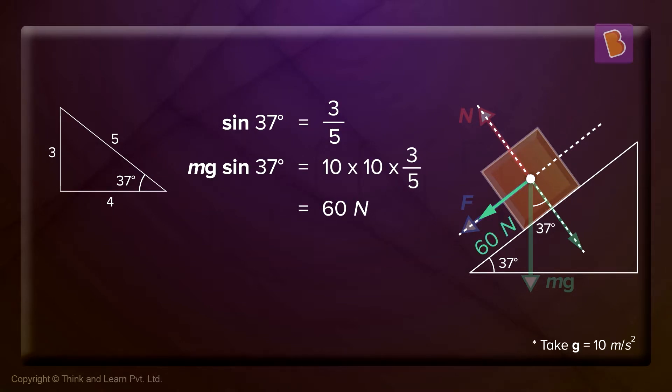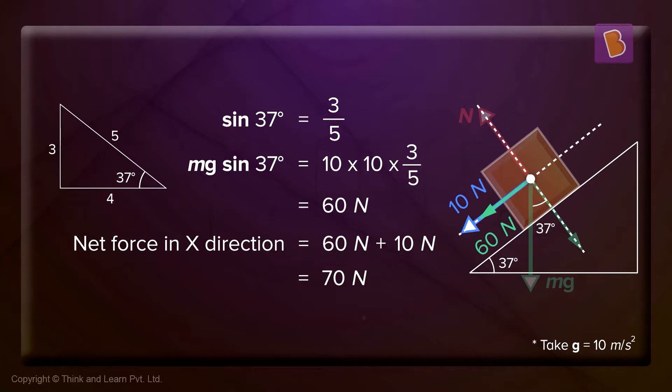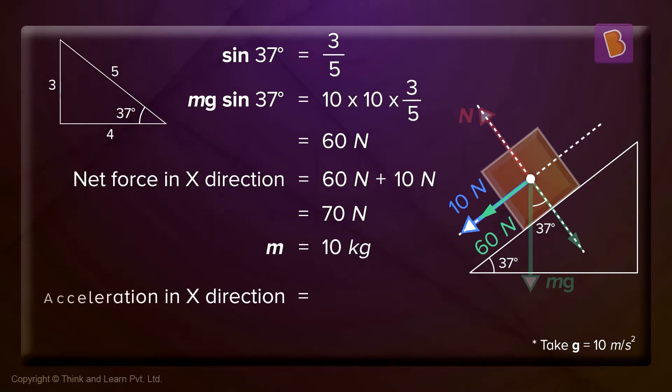Now, if I find the net force in that direction, that will be 60 Newtons plus 10 Newtons, equal to 70 Newtons. That's the net force in the x-direction. Now, you have the mass, right? How much is the mass? Yes, 10 kg. So the acceleration in the x-direction will be 70 divided by 10, that is 7 meters per second squared.